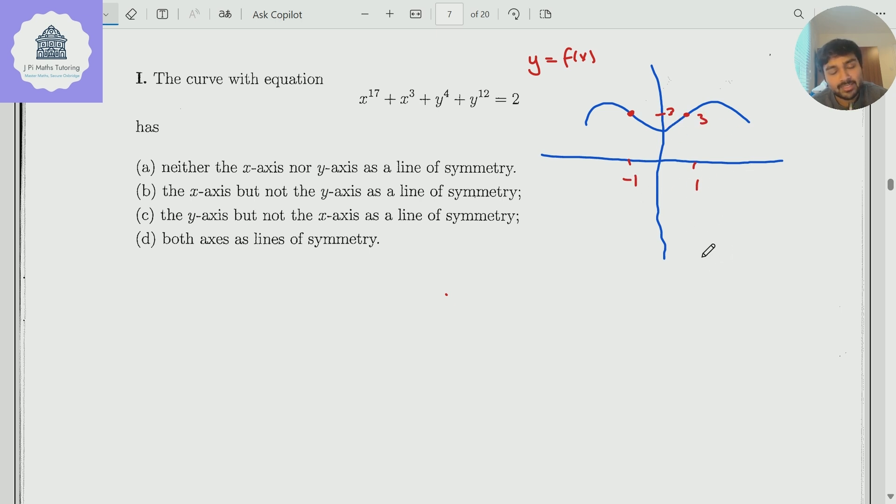So if it's symmetric around the y-axis, I need f of x, whatever that is. So f of 1, for example, is 3, but that has to be the same as f of minus 1. So f of x equals f of minus x for all x.